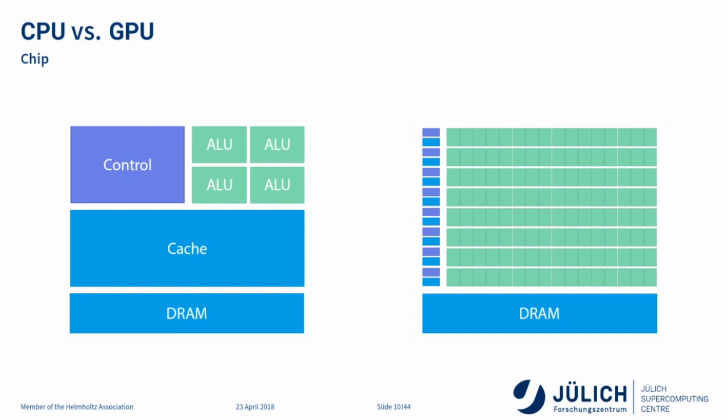CPUs do things like out-of-order execution — taking machine code and deciding to execute instructions in parallel or speculatively executing if-branches, then backtracking if wrong. All these complex features are implemented in hardware to exploit parallelism without requiring you to explicitly program in parallel. GPUs never tried any of that, because GPUs were originally meant for graphics — putting pixels on a screen — and nobody cares how quickly you can put a single pixel on screen.